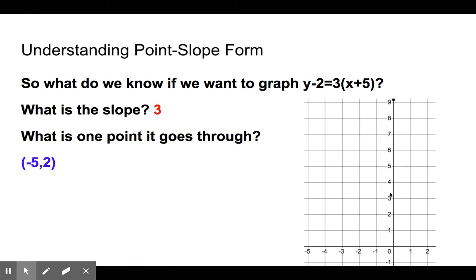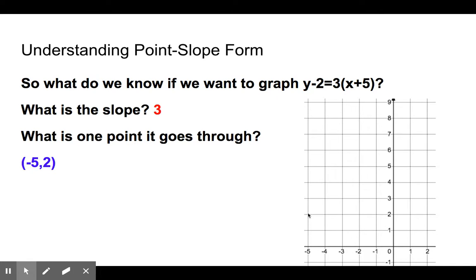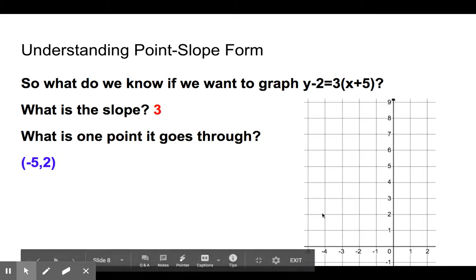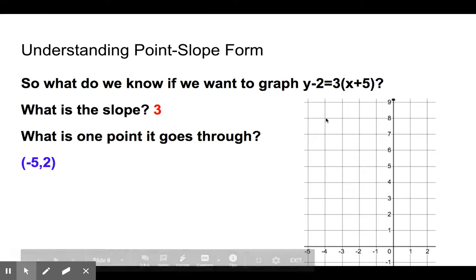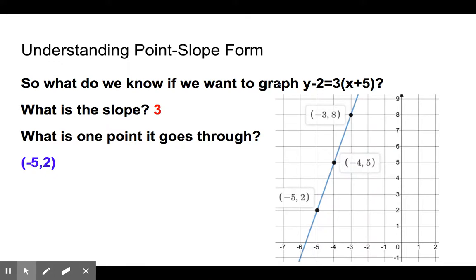So now when I go to graph this, I'm going to start off with the point negative 5, positive 2 and put a point right there. Then my slope is 3, which means for every 1 x value I rise 3 — rise over run is 3 over 1. Rise 3, run 1 gives my next point; another rise of 3 and run of 1 gives another point. All I need is 2 points, but I get a few extra ones, then draw the line through them. I have now graphed this equation in point-slope form.